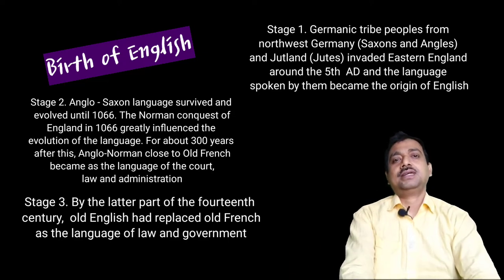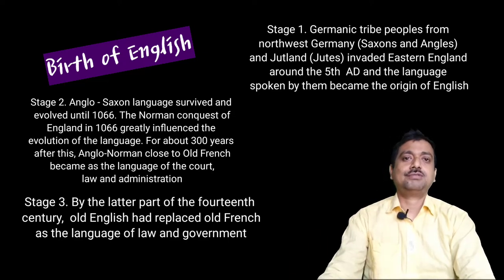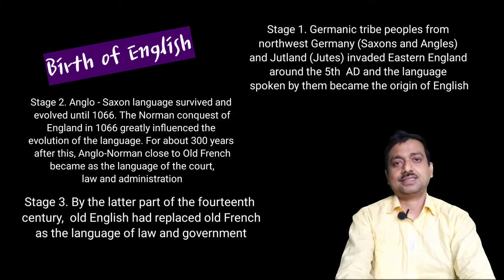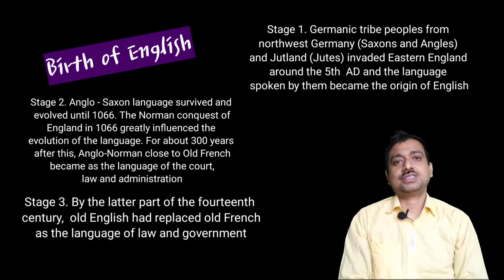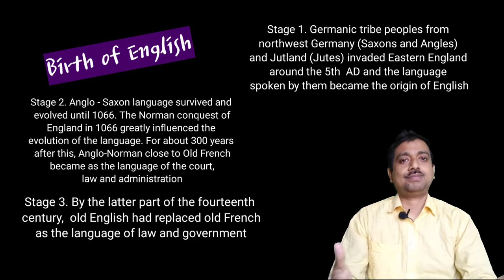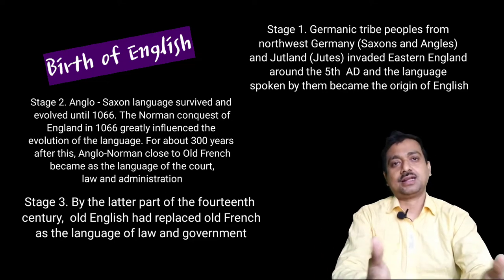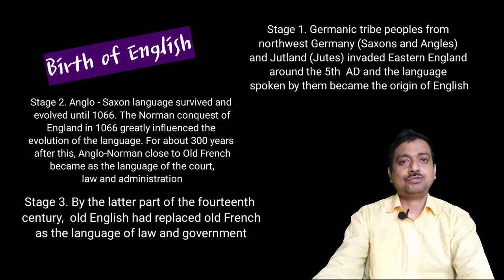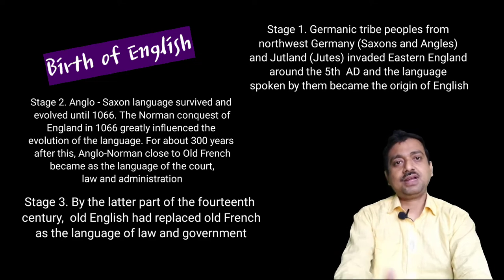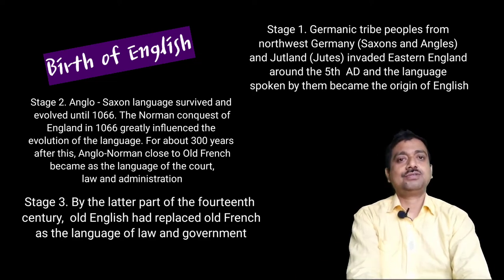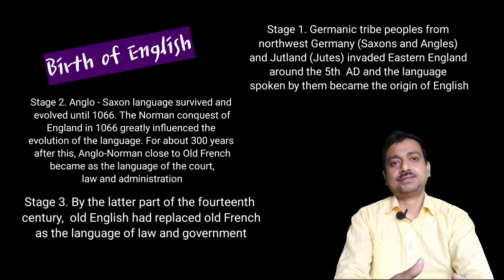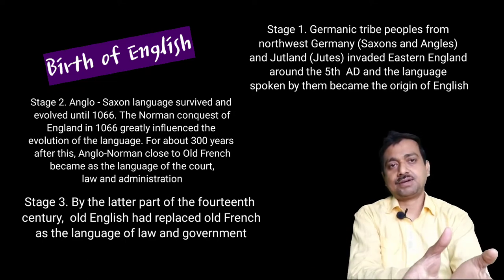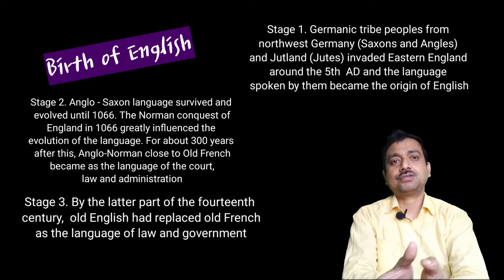The birth of English language happened in several stages. The tribal Germanic peoples from Northwest Germany — most probably the Saxons and Angles — and from Jutland, the Jutes, invaded eastern England around the 5th century AD. The language spoken by them became the origin of English, because as they became the winners, their language also gained prominence.